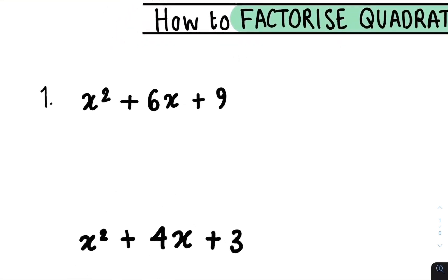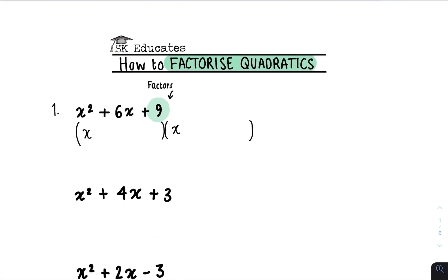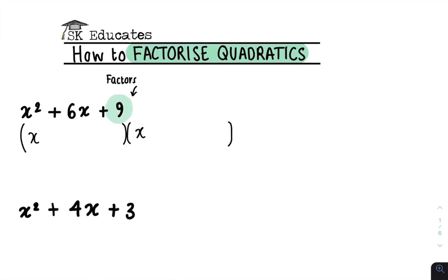Here we have x squared plus 6x plus 9. Your first step is to open up two sets of brackets. You place an x here and you place an x here. Your next step is to look at this last number, which is a 9, and you want to find the factors of this number. Remember, factors are just pairs of numbers that multiply together to give you 9.